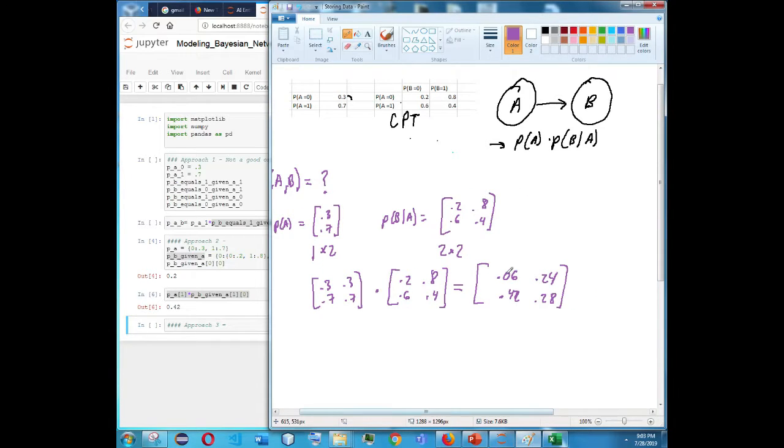Because believe it or not, this right here, you just took P of A, you multiplied it by P of B given A. This right here is your joint distribution. So this is P of A, this is P of B given A, and then this is P of B comma A, or you could really say it's P of A comma B. It's just a joint distribution.